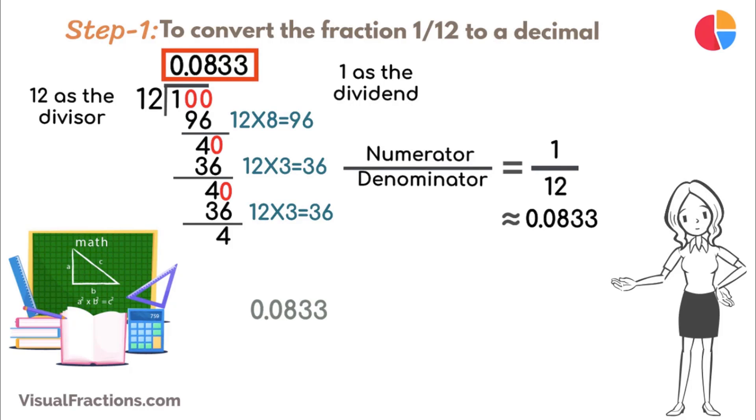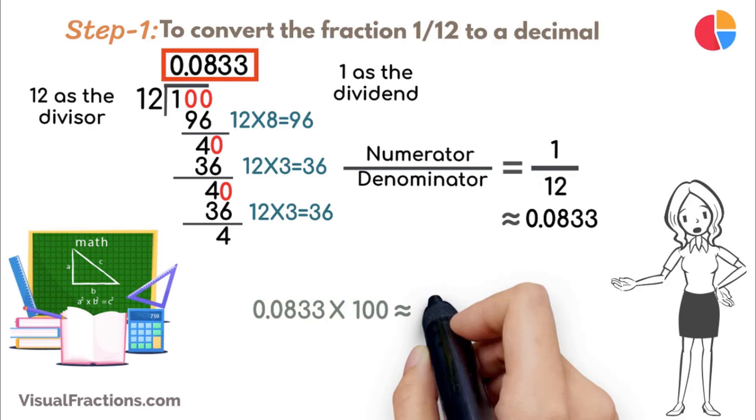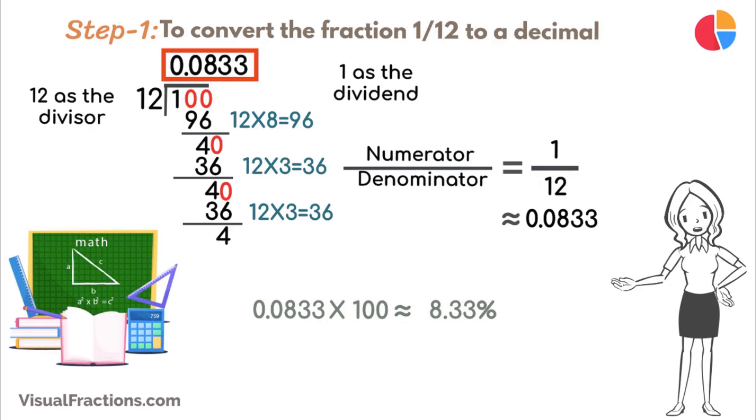Now, to convert 0.0833 to a percent, we simply multiply it by 100, resulting in approximately 8.33%.